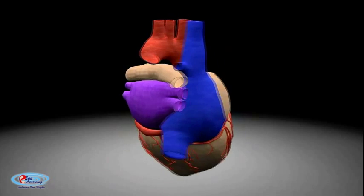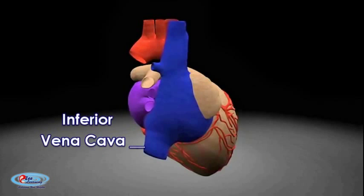The inferior vena cava, also known as the posterior vena cava, is the large vein that carries deoxygenated blood from the lower half of the body into the right atrium of the heart. It is posterior to the abdominal cavity and runs alongside the vertebral column on its right side. It enters the right atrium at the lower right back side of the heart.